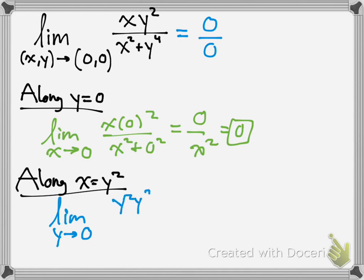So, that would be y squared times y squared over y squared squared plus y to the 4th. And that would give you y to the 4th over 2y to the 4th, which these cancel, so you would get 1 over 2, 1 half.